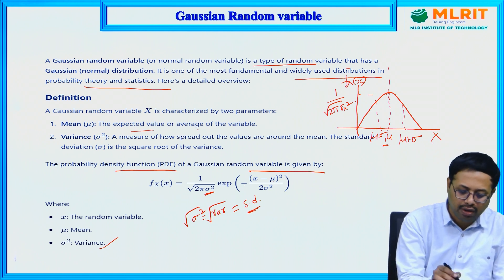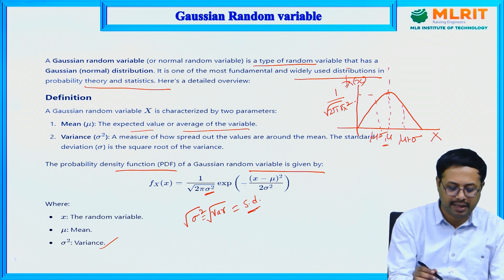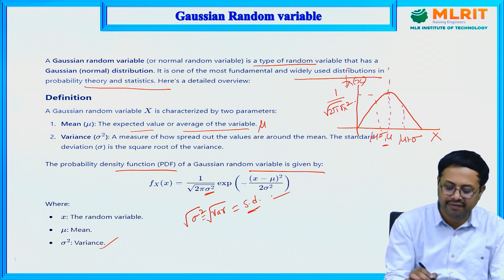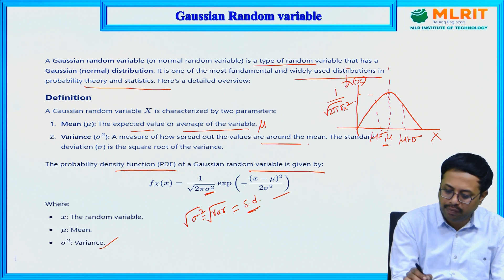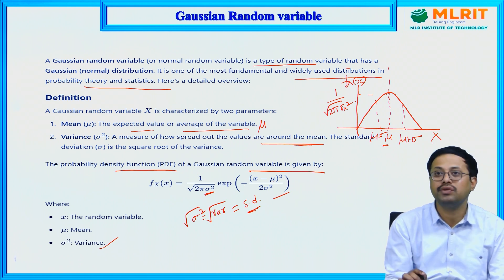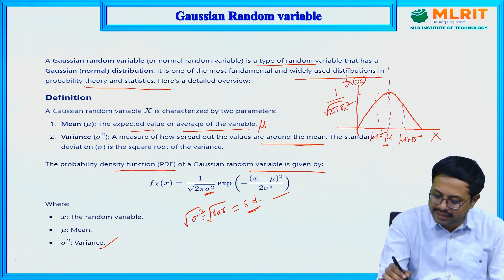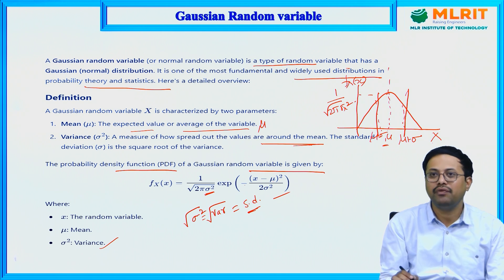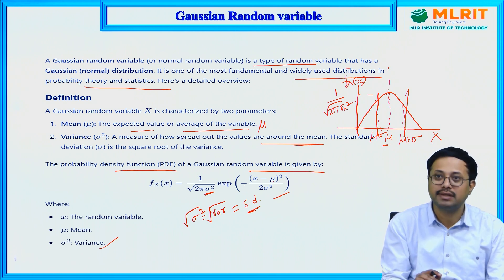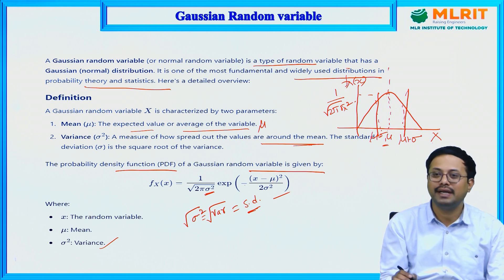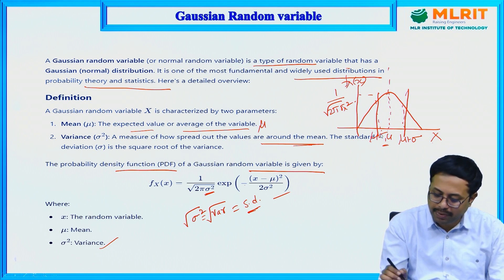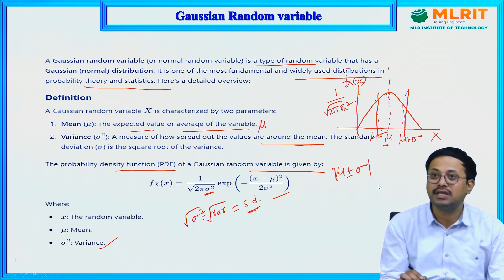By definition, μ is the expected or average value of the random variable. Variance is a measure of how spread the values are around the mean. For example, in a class of 100 students, all students may not have the same height — the deviation from the mean is expressed as μ plus or minus the deviation with respect to mean.